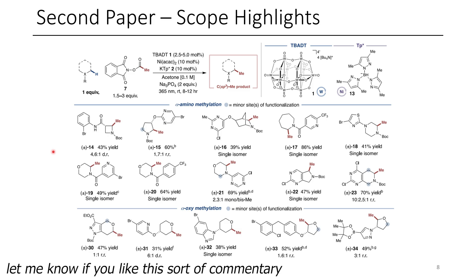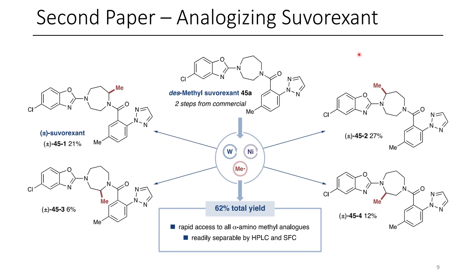So sometimes this can impart desirable properties to a drug molecule, maybe it's something you want to assess. This is a potential method for doing that. So in addition to alpha amino compounds, they also demonstrated alpha-oxymethylation. And here are some examples of that. If you'd like to see even more examples, I'd encourage you to check out the full paper where they also demonstrate other examples.